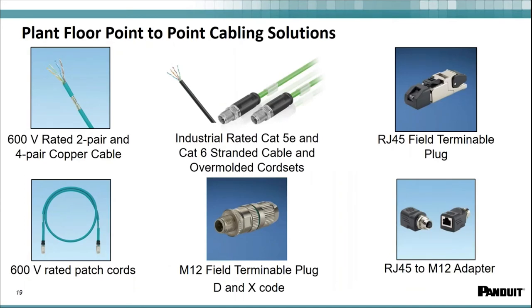Common terms you'll find on the plant floor: your 600-volt cable, industrial-rated CAT 5E and CAT 6 cable, overmolded cord sets, field-term plugs, panel adapters, and field-terminable plugs in D-code and X-code. D-code is your CAT 5E connector — a 4-pin. X-code is newer, for CAT 6A and CAT 7 M12 — an 8-pin connector. And of course a myriad of 600-volt patch cables typically found on the plant floor.